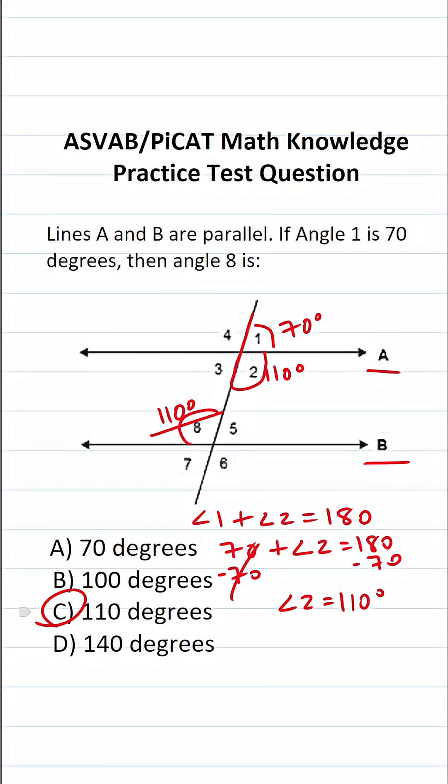So the answer is C, 110 degrees. If you need more help with transversals, I'll put a link to my video on that topic in the description. This topic does sometimes show up on the ASVAB and PiCAT.